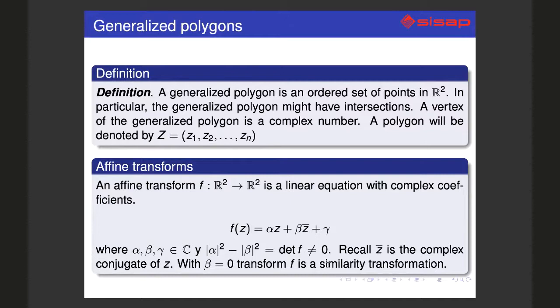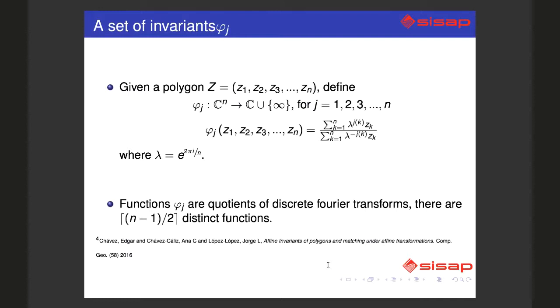In the case of beta equals zero, the transform is a similar transformation, exactly what we need. For these complex numbers we can define invariants that were defined in the paper referenced. These invariants are defined as quotients of discrete Fourier transform coefficients.